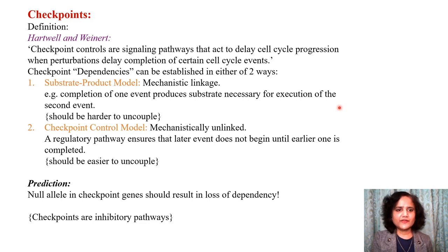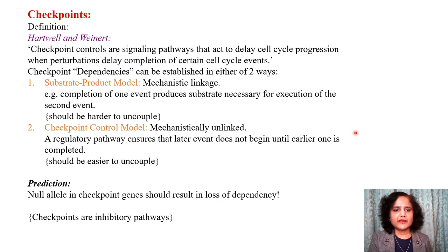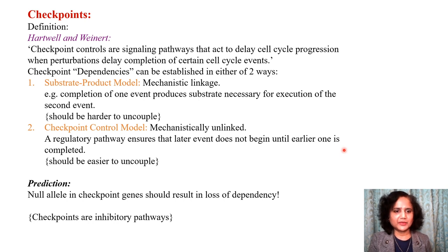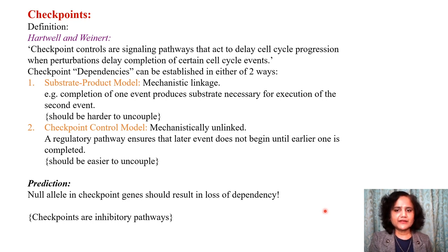The other model is the checkpoint control model, where two events are mechanistically unlinked. A regulatory pathway dedicated to this purpose ensures that the later event does not begin until the earlier one is completed. This should be easier to uncouple than a mechanistic linkage. A prediction is that a null allele in checkpoint genes or inhibitors of checkpoint proteins should result in a loss of dependency. Checkpoints are therefore likely to be inhibitory pathways.